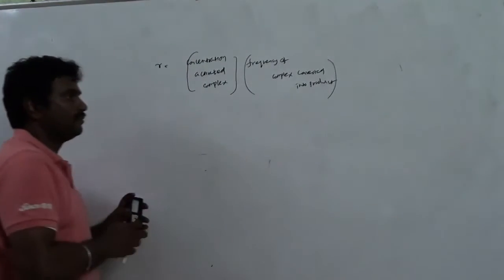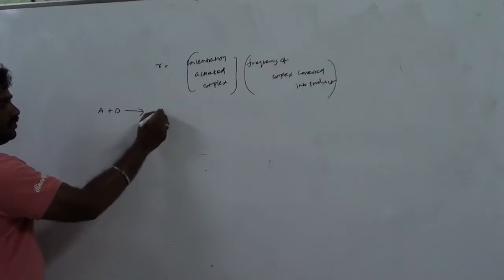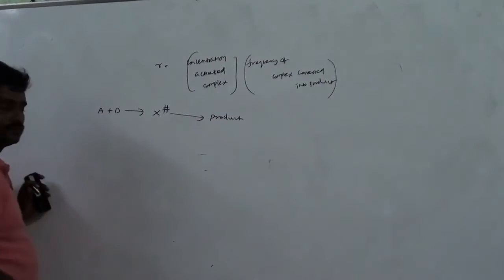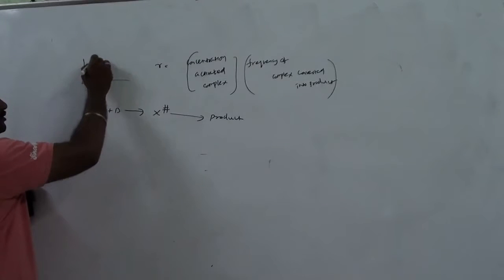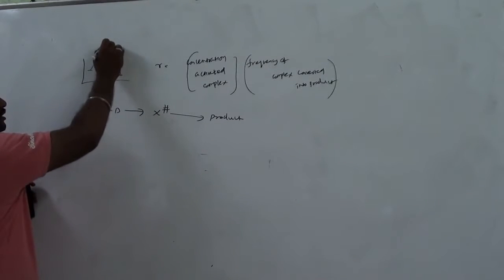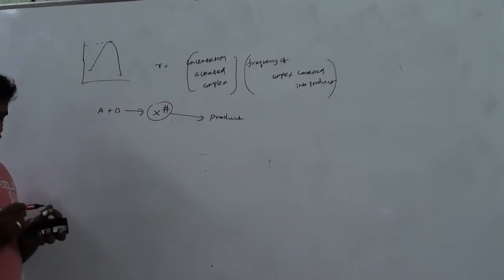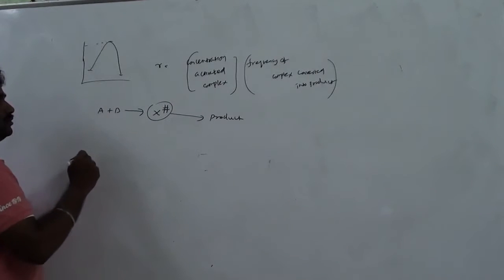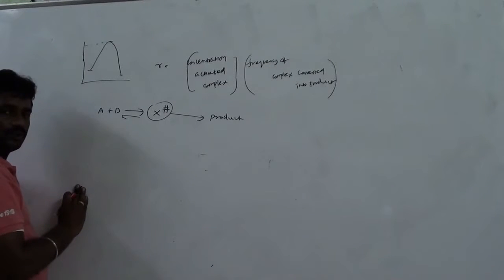We consider A plus B first forming the activated complex, which then changes into product — two steps. First, what is forming? A transition state. Then it is converted into product. The transition state is not an intermediate. The first step should be reversible formation; any unstable species may reverse back into reactants.